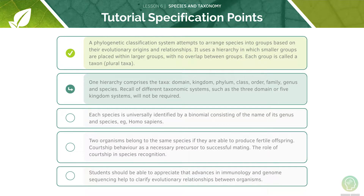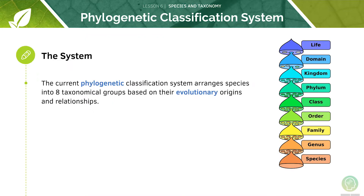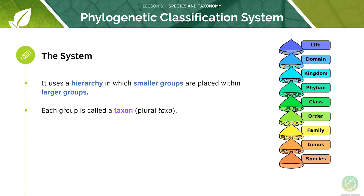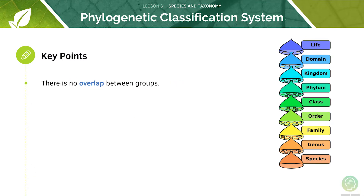Next we will cover different taxonomy systems. The current phylogenetic classification system arranges species into eight taxonomical groups based on their evolutionary origins and relationships. It uses a hierarchy in which smaller groups are placed within larger groups. Each of these groups is called a taxon. There are some key points to remember: first, there is no overlap between the groups, and there is only ever one organism in one group at each level.